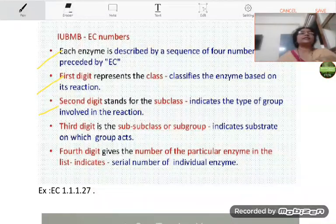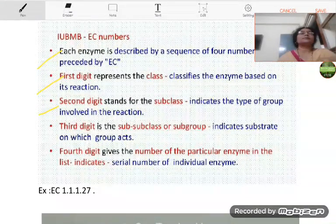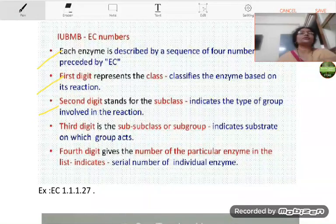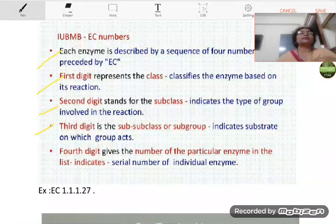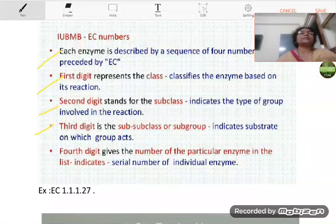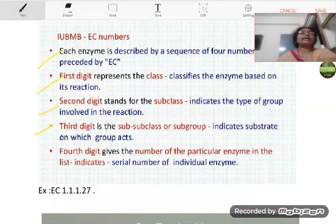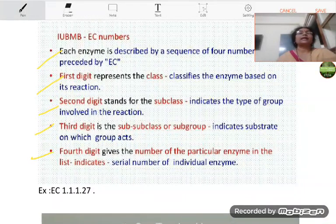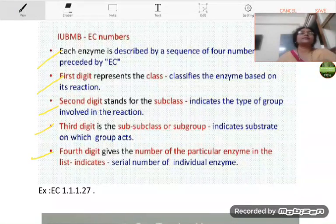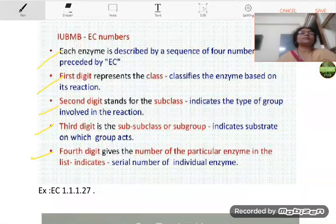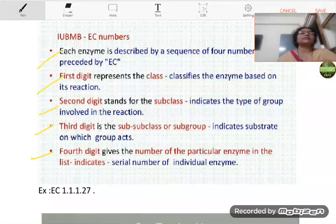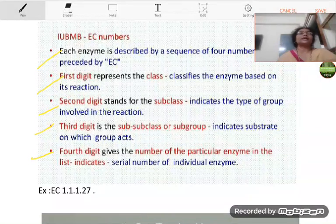Second digit stands for the subclass which indicates the type of group involved in the reaction. Third digit is the subclass or subgroup indicates substrate on which group acts. And the fourth digit gives the number of the particular enzyme in the list, it means serial number of individual enzyme.